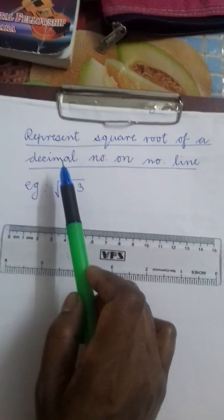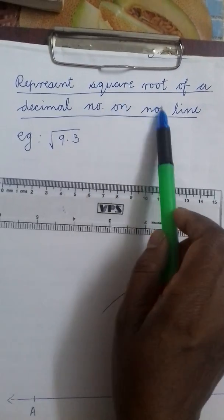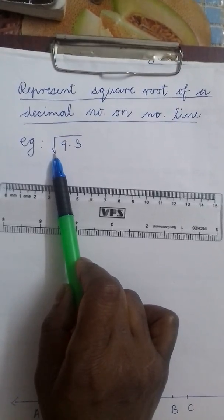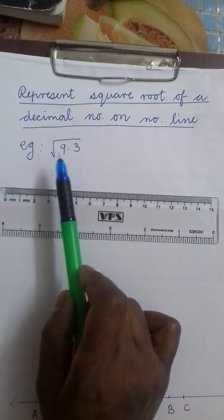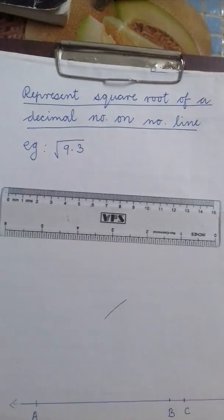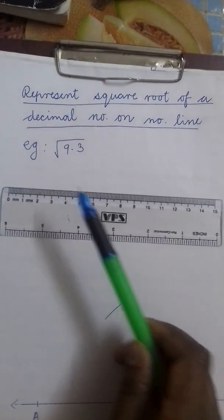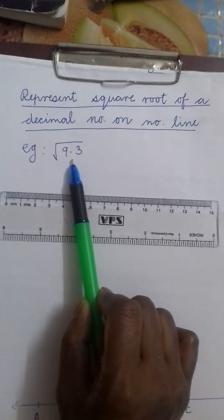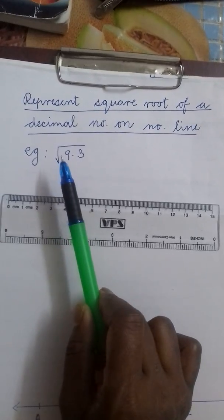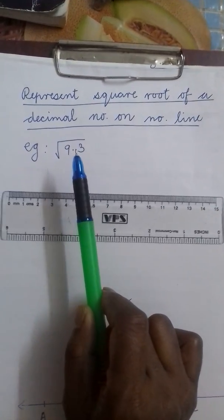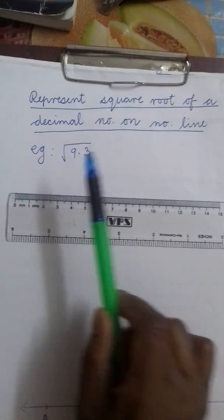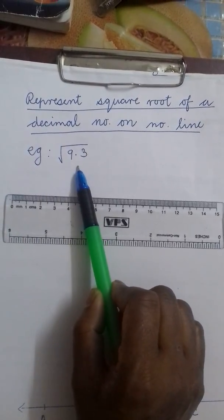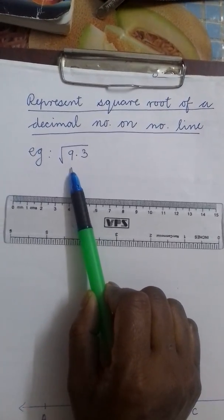Next we are going to learn about representation of square root of a decimal number on number line. In previous classes, we have learnt how to represent square root of a number like root 2, root 3 etc on number line. And here we are going to learn about decimal number on a number line. Both the constructions are entirely different. So you should not get confused with the constructions. Once you learn construction of root 2, root 3 etc thoroughly, then only try to learn decimal numbers on number line.